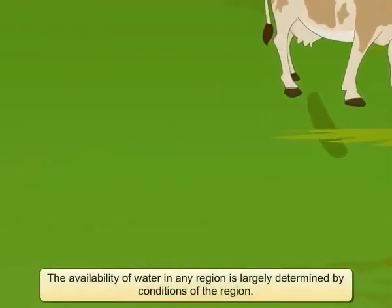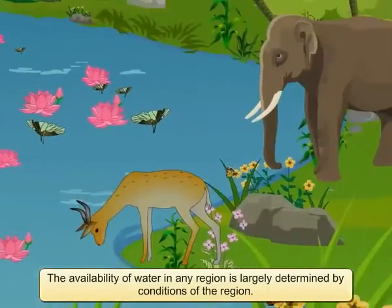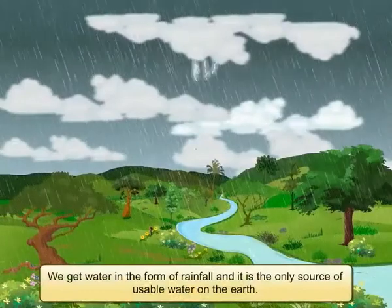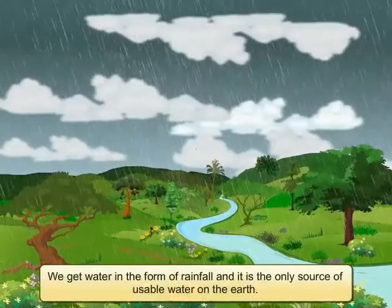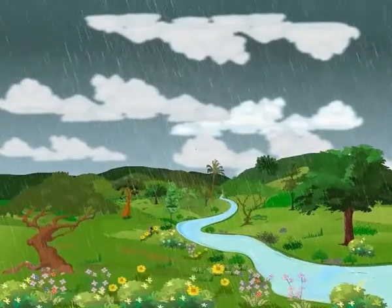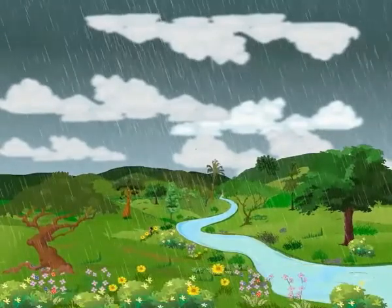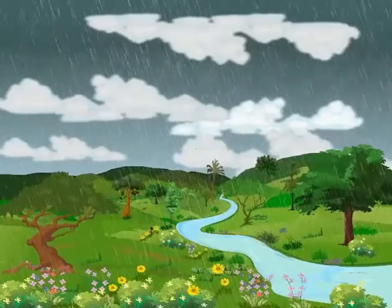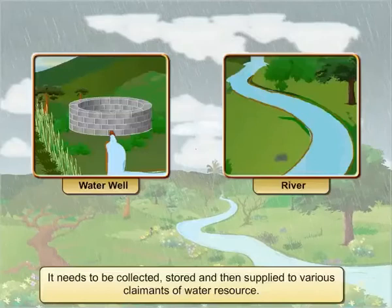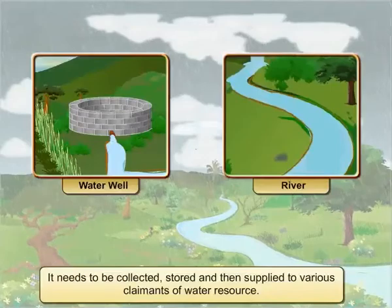The availability of water in any region is largely determined by conditions of the region. We get water in the form of rainfall and it is the only source of usable water on earth. However, rainfall, though it is the source of water, does not by itself become a water resource. It needs to be collected, stored and then supplied to various claimants of water resource.